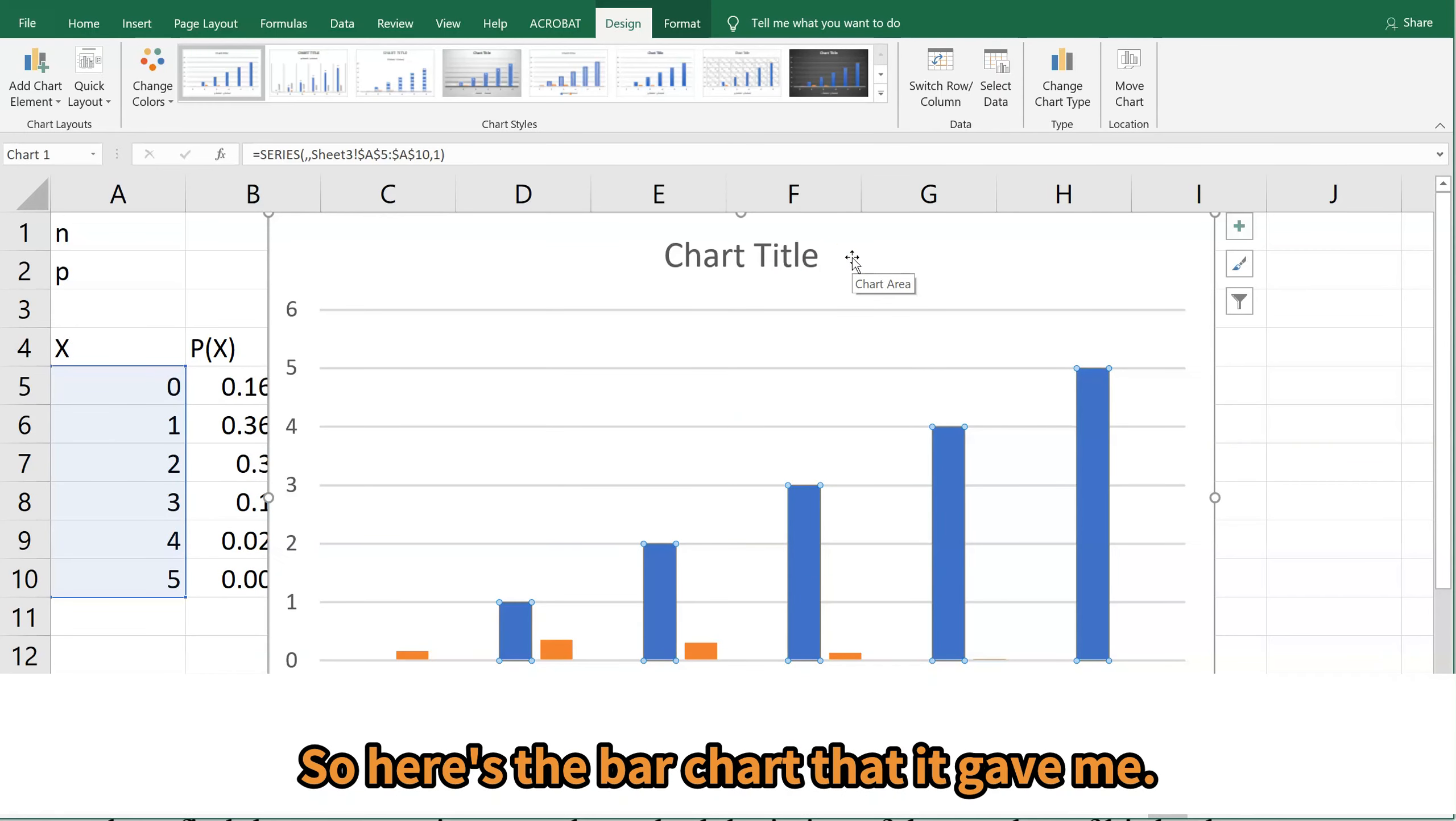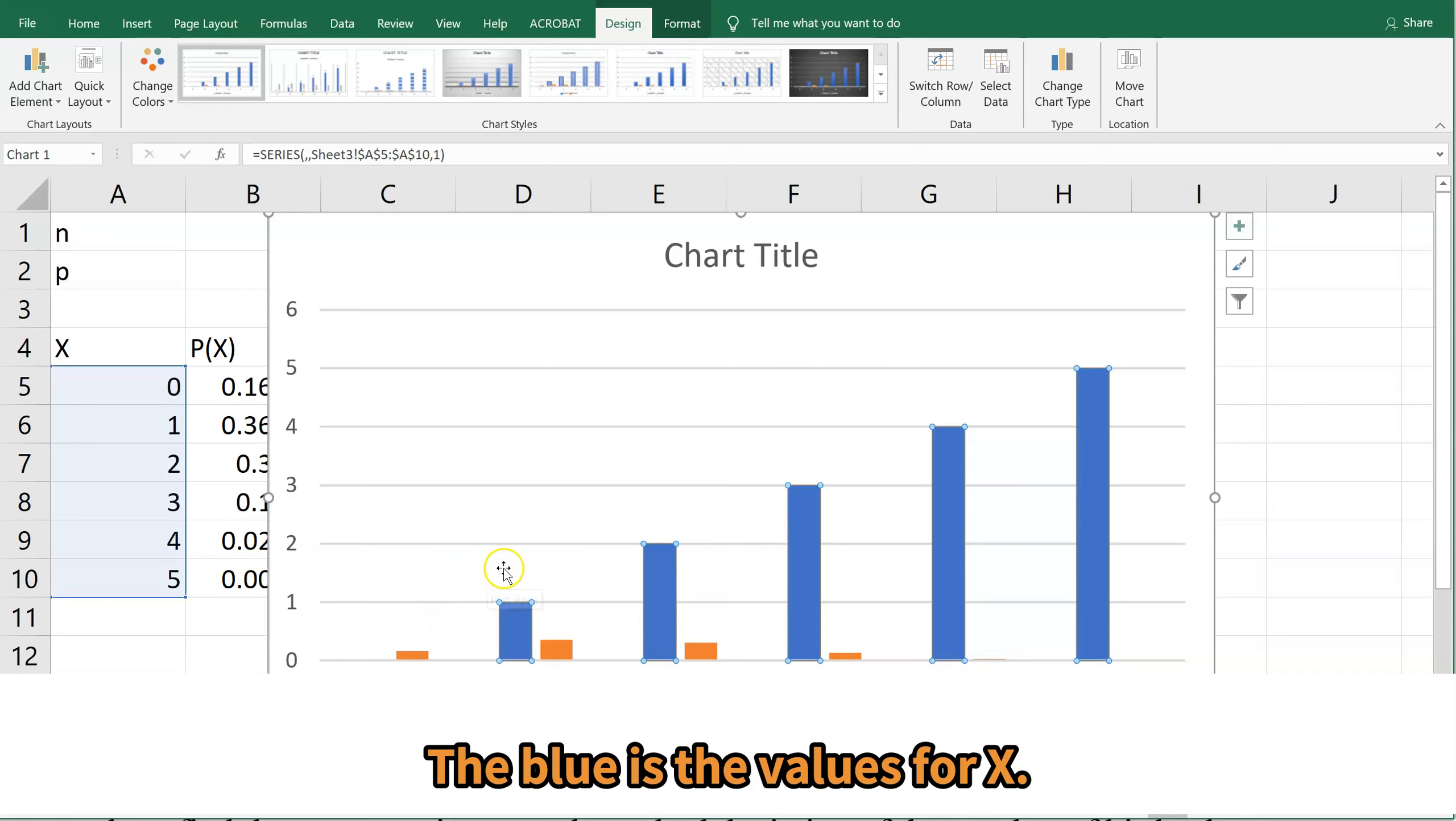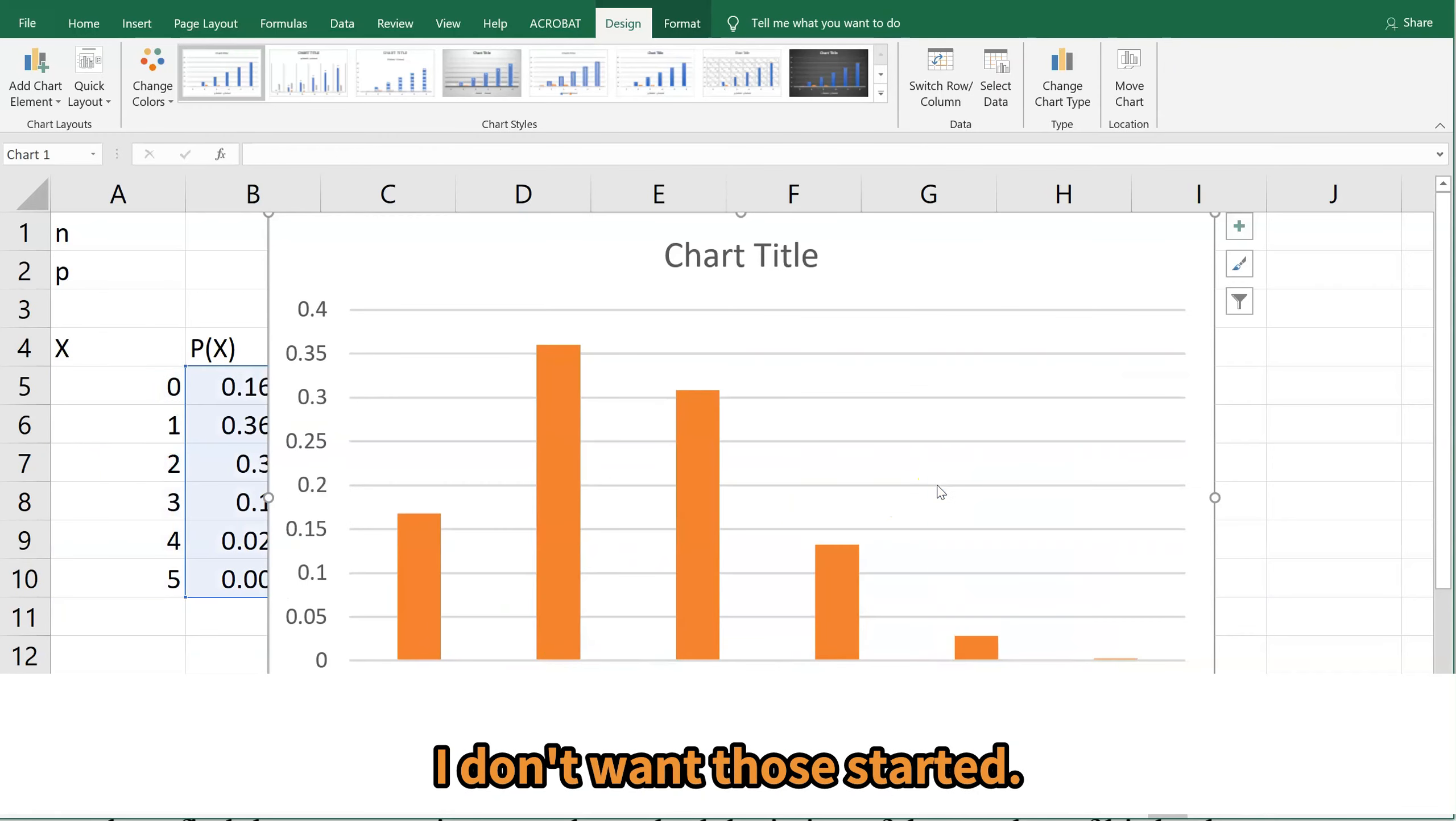So in my chart, I deleted the one, two, three, four, five, six. Let's undo it so we can see what that looks like. So here's the bar chart that it gave me. The blue is the values for x. I don't want those charted. I want x to be my label. Delete the one, two, three, four, five, six.